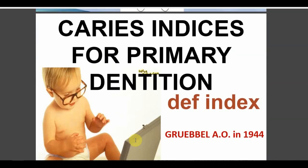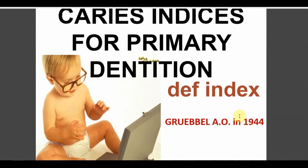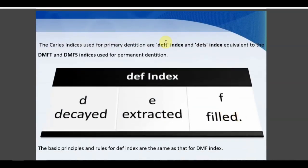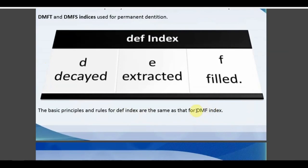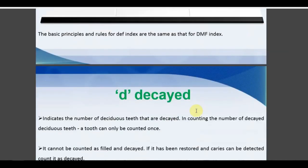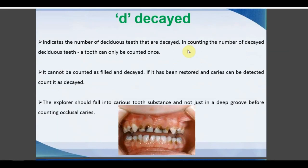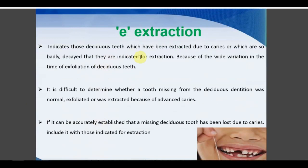The DEF index for primary dentition was given by Gruebbel in 1944. It is another version of DMFT adapted for deciduous teeth: D = Decayed, E = Indicated for Extraction, F = Filled. The basic principles and rules are the same as DMFT. D indicates the number of deciduous teeth that are decayed — counted only once. The explorer should fall into the carious substance and not just into a deep groove before counting occlusal caries.